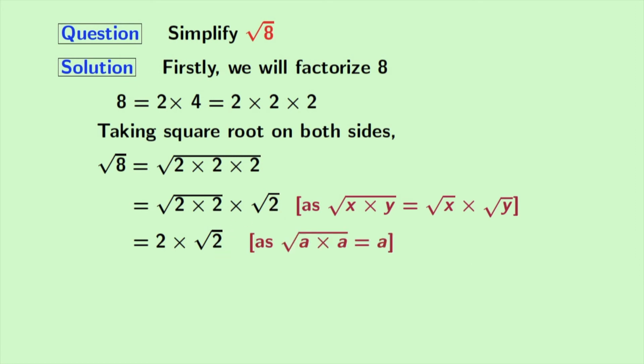In the first square root, we used the rule square root of a times a is equal to a. Here, a is 2.